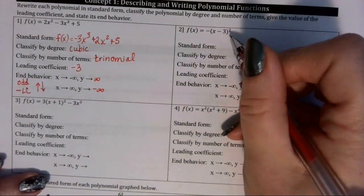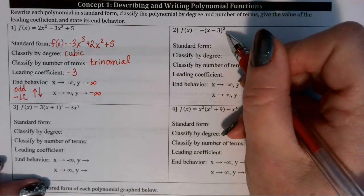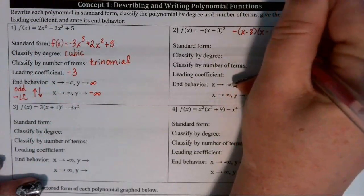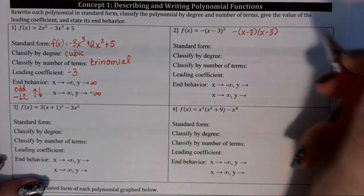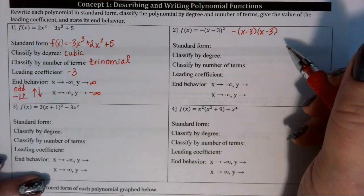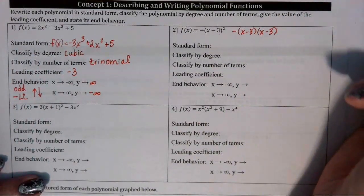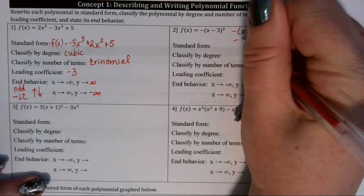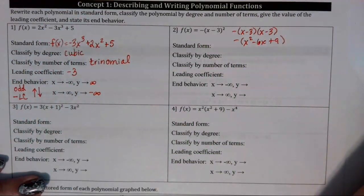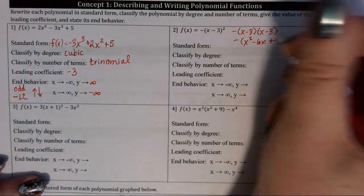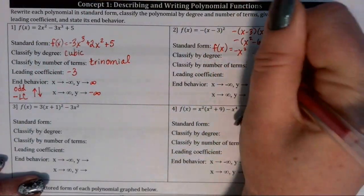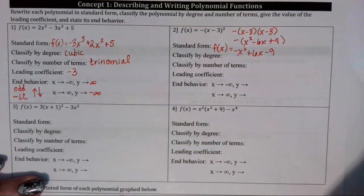In example 2, we're going to expand the binomial negative x minus 3 times x minus 3. You can FOIL those together using repeated distribution, or you can use the shortcut for a perfect square trinomial, which gives x squared minus 6x plus 9. Then we distribute the negative through the parentheses to get our standard form: negative x squared plus 6x minus 9.